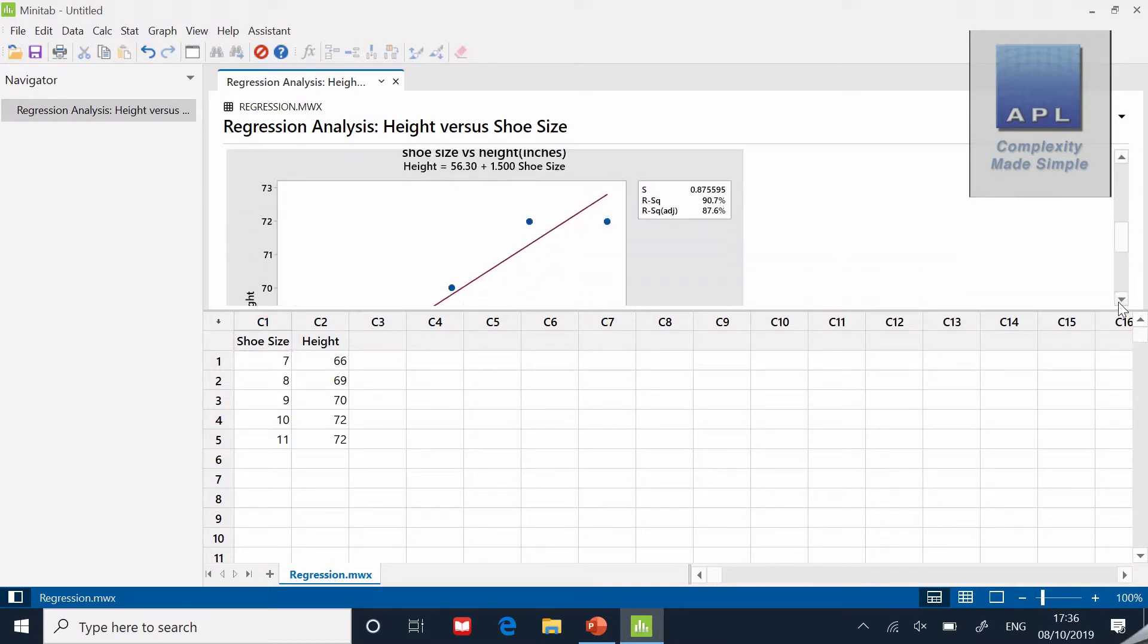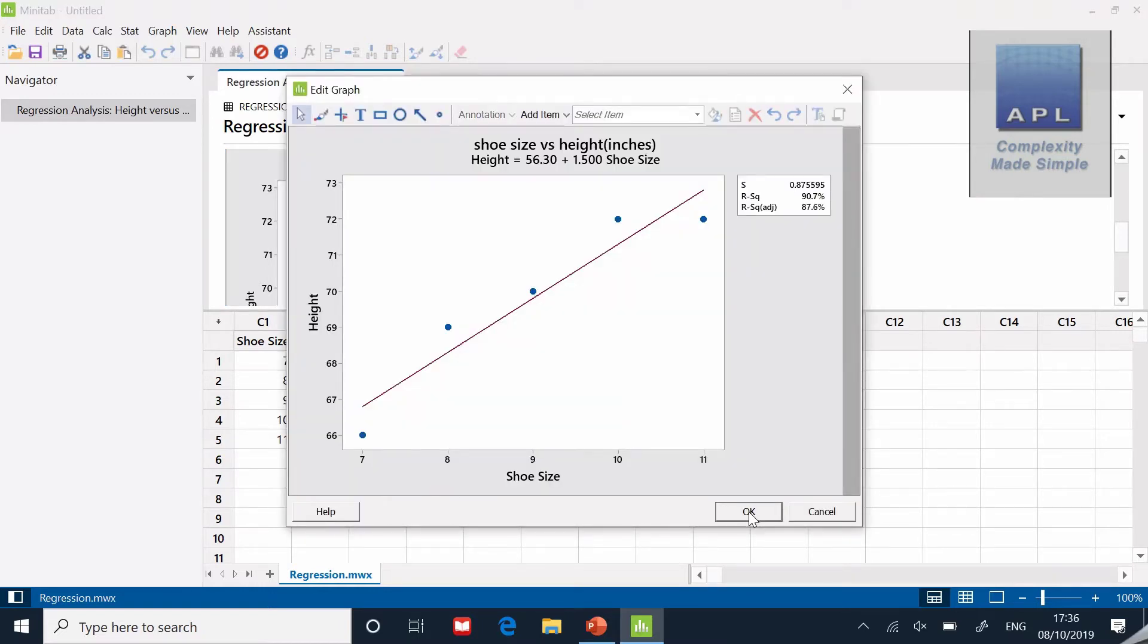But if I scroll up, all of that information is nicely contained in the graph. I've got the title at the top, which is great, then I've got the equation just below it, and then I've got the R squared 90.7. You can see the diagram with the fitted line, the line of best fit—it's all there in a simple one-shot diagram. So I don't really need to look at the session window. All the information I need is on the diagram. There is the fitted line plot with an equation and R squared using Minitab.